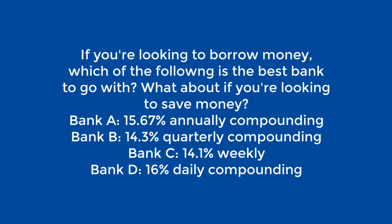Bank A: 15.67% annually compounding. Bank B: 14.3% quarterly compounding. Bank C: 15% weekly compounding. Bank D: 16% daily compounding.